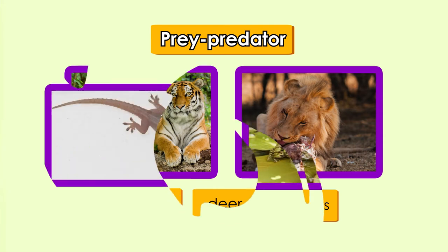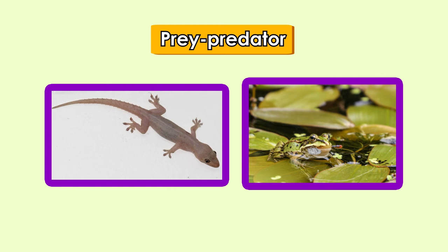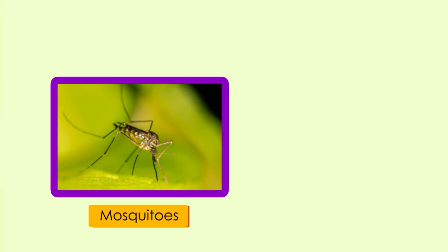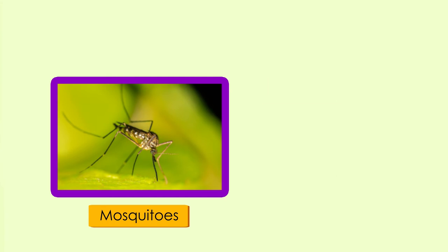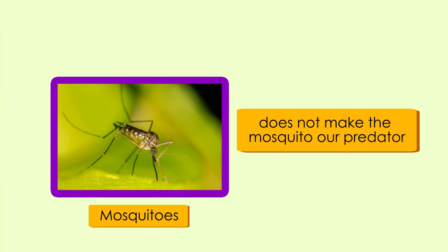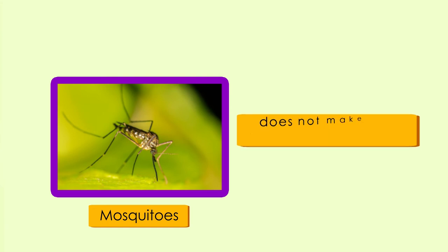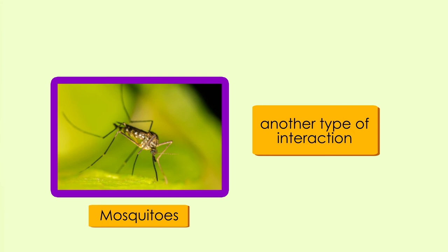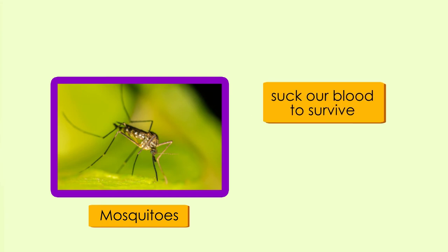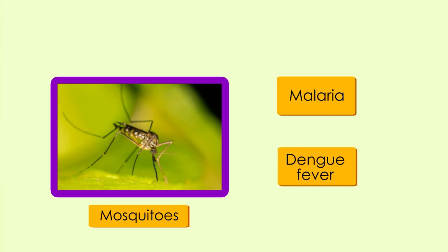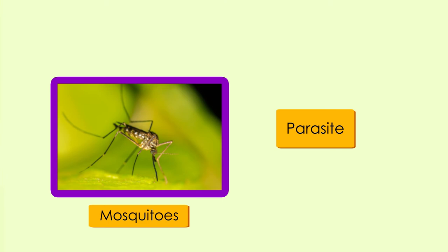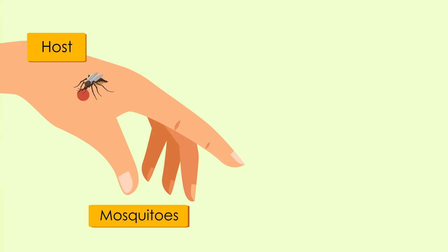Lizards and frogs are predators too — they prey on insects like flies, grasshoppers, and mosquitoes. When a mosquito bites us, we provide food to the mosquito, but that does not make the mosquito our predator because we do not die when bitten. Mosquitoes suck our blood to survive and spread diseases like malaria and dengue fever. Such organisms are called parasites because they benefit from harming us, and we are their host.